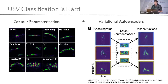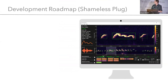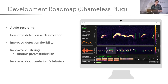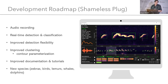Just a shameless plug: I love DeepSqueak and want to keep developing it. I am starting a lab and it is extremely difficult to do software development. If anyone knows anyone really interested in USVs and is a good MATLAB coder, we'll hopefully be recruiting in the next six months to a year. We have a development pipeline — basically to allow audio recording in the app, real-time detection and classification. We know that's possible because we've built prototype versions. We also want to improve clustering, contour parameterization, and detection flexibility, since DeepSqueak uses some pretty outdated detection techniques that would be an easy upgrade.